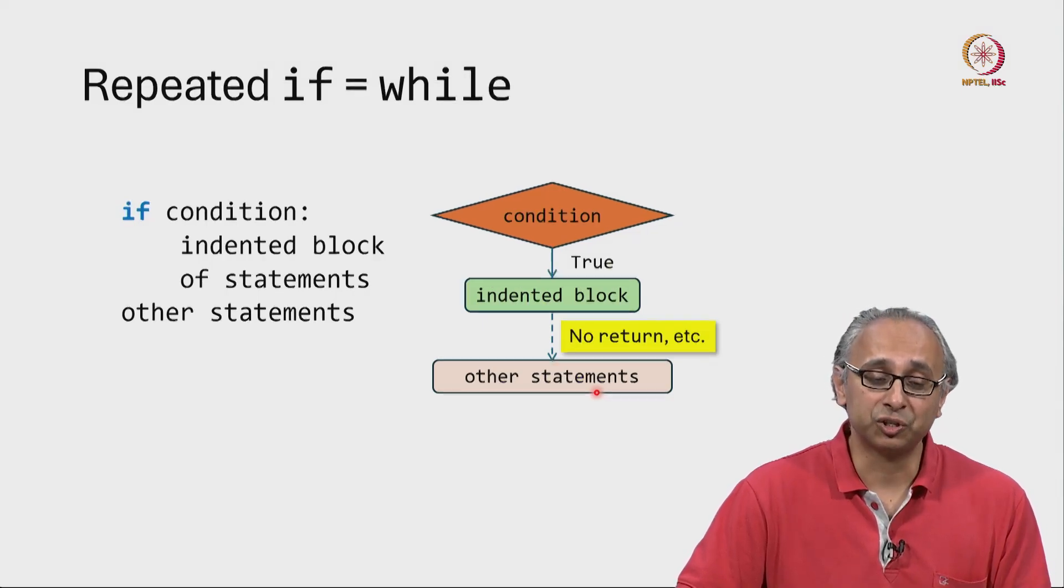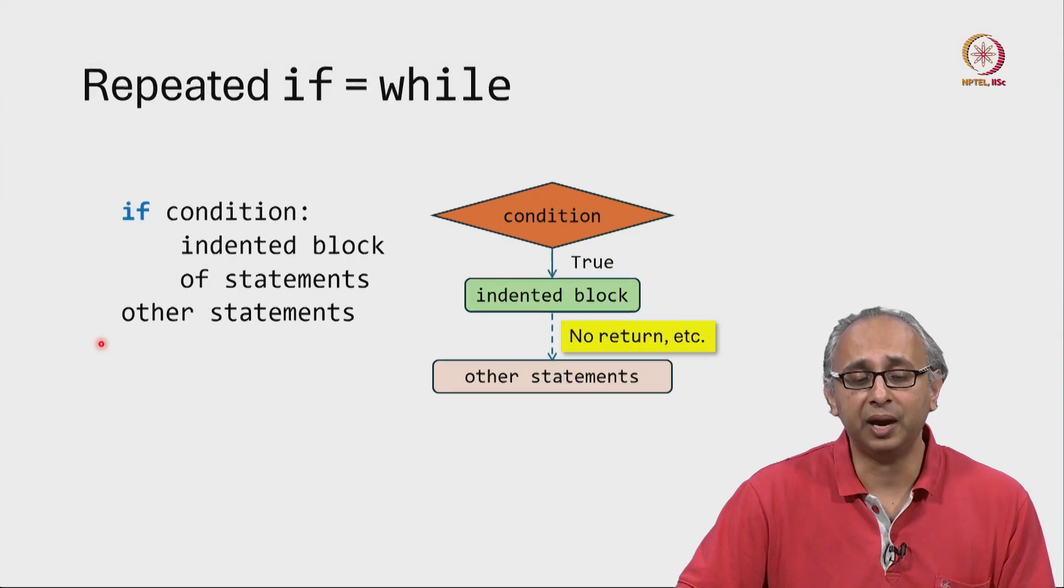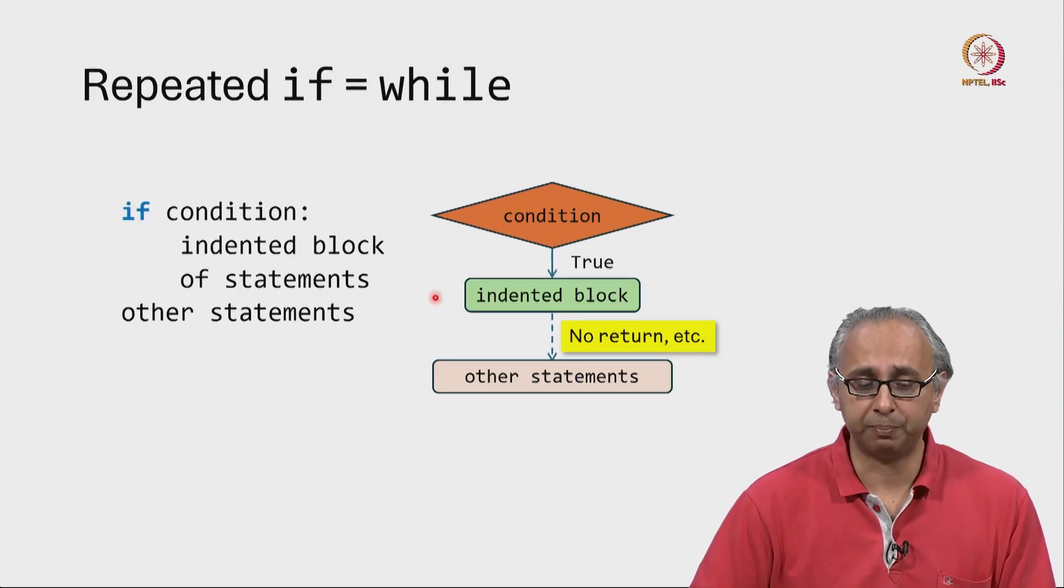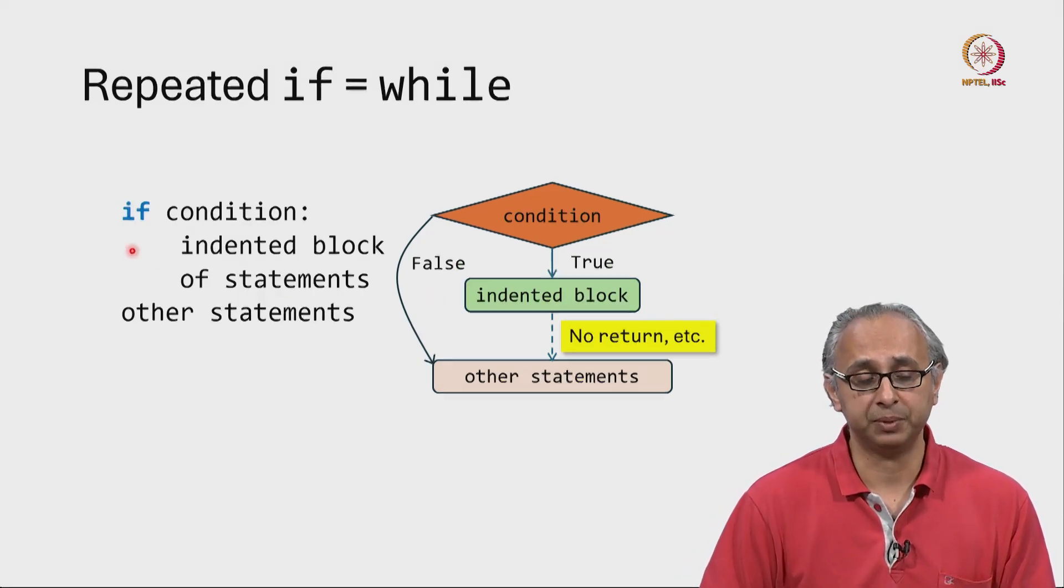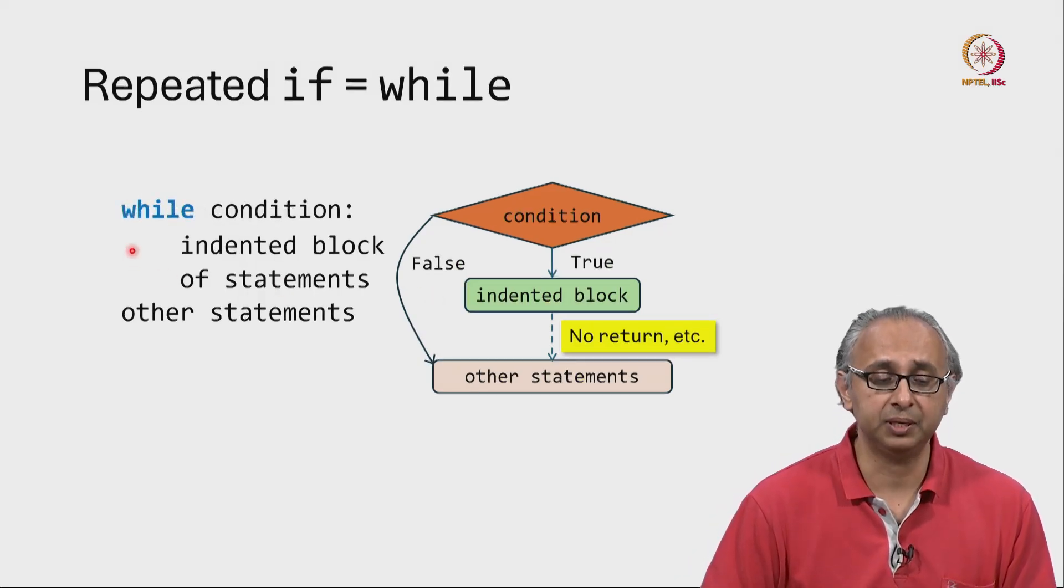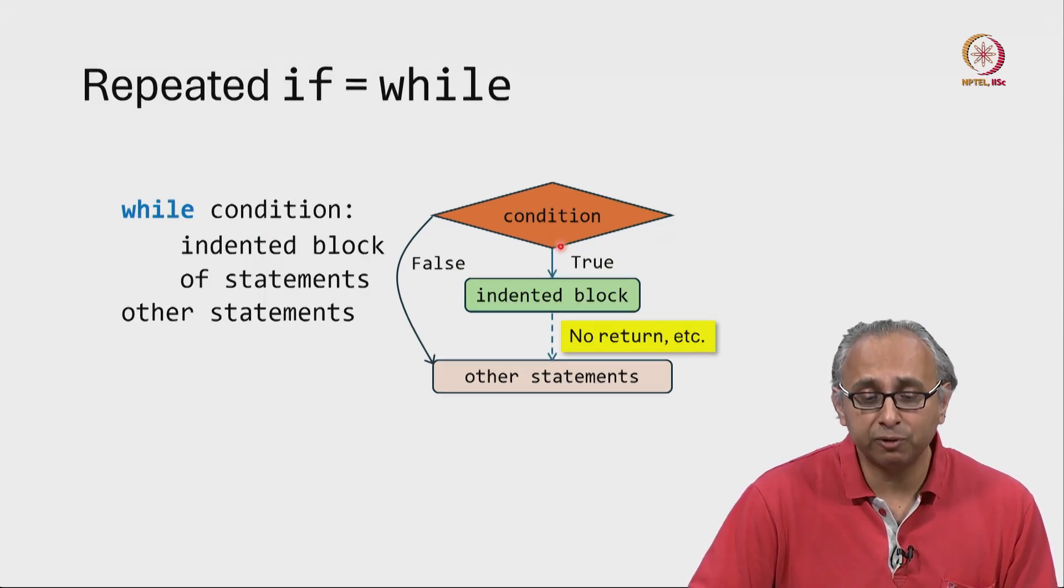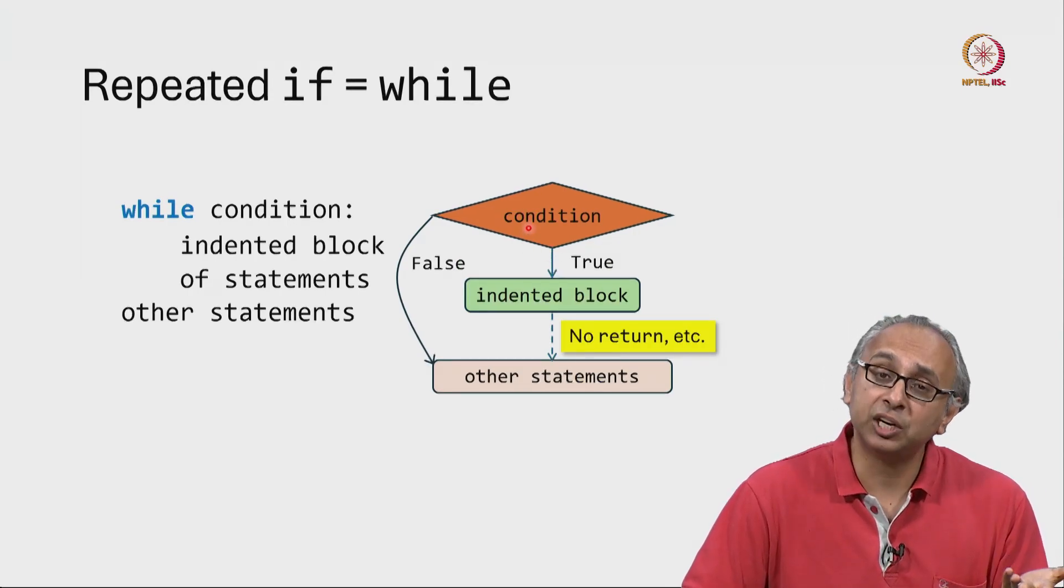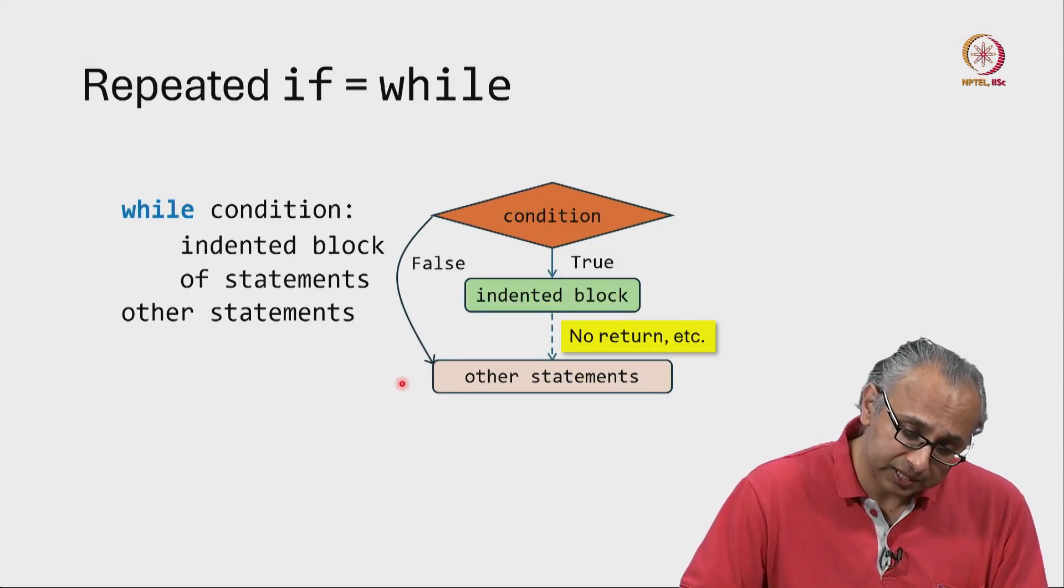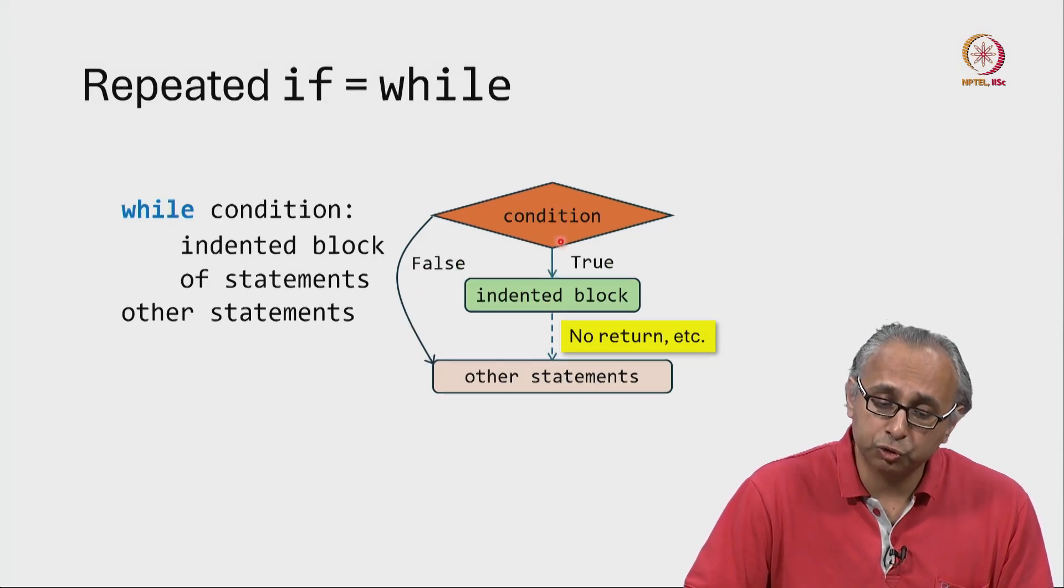This is what happens if the condition is true. What happens if the condition is false? Well, if this condition is false, we know that we immediately skip to the other statements which we can represent diagrammatically like this. Now when we change this if statement to a while statement, once again we have some condition. Once again, we will first evaluate that condition. Once again, if that condition is false, we will skip past this and go to the other statements. And if the condition is true, we will do the indented block.